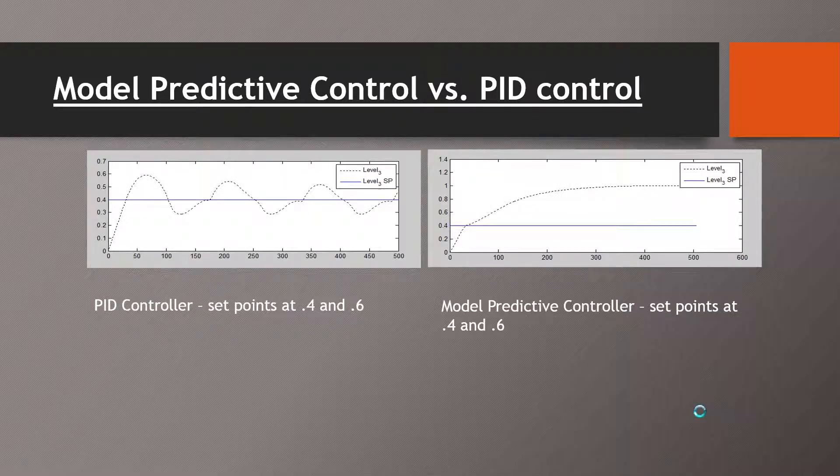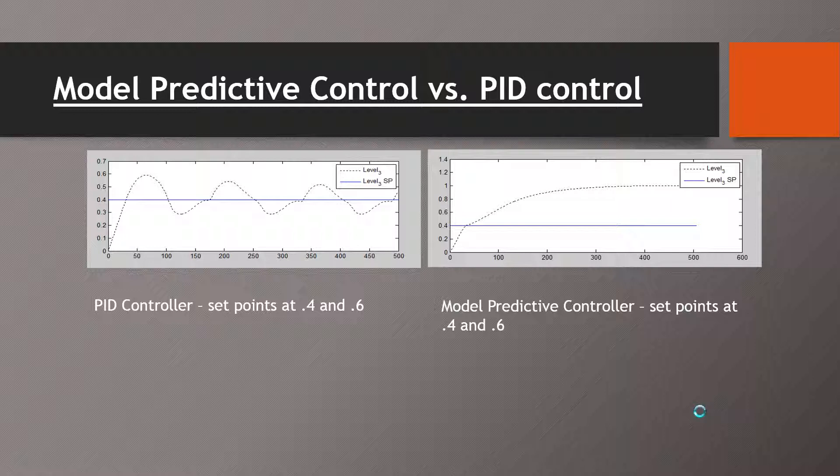However, when we varied our set points so that one tank was at 0.4 and the other at 0.6, we found that the PID controller oscillated greatly and very slowly converged on our set point while the model predictive controller was unable to converge.